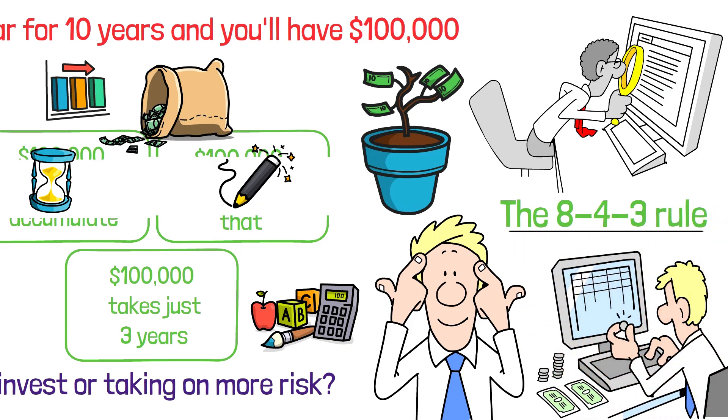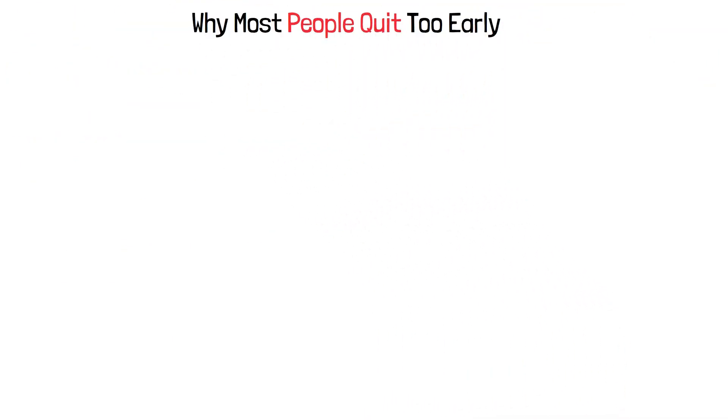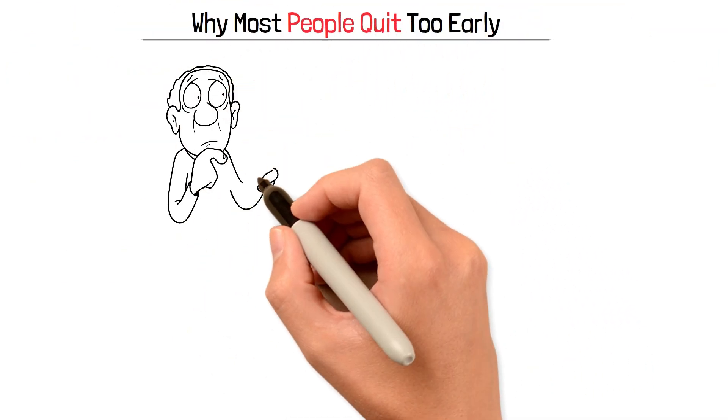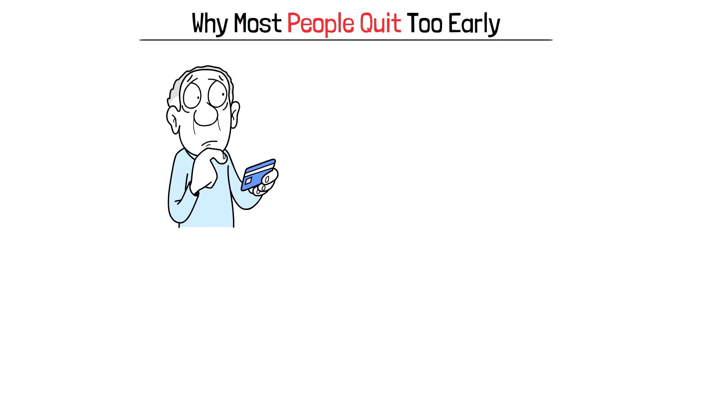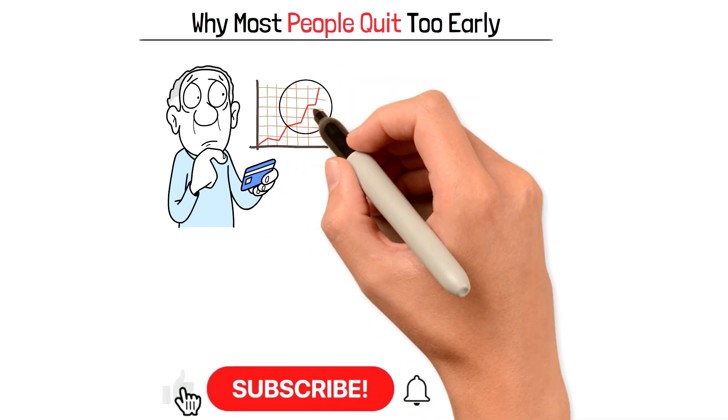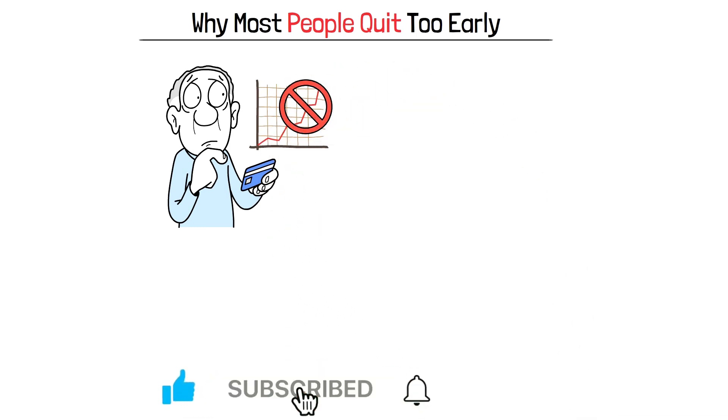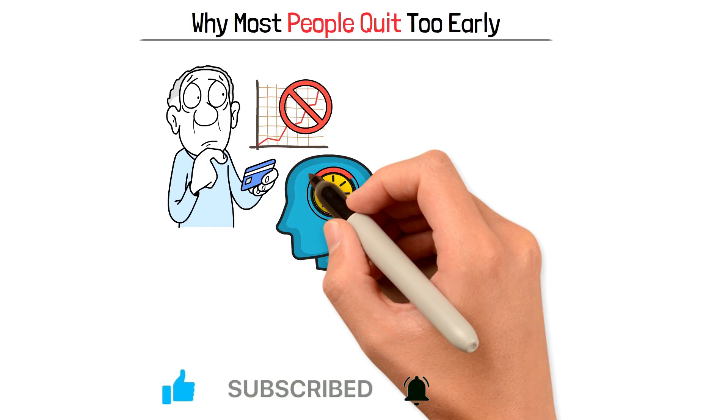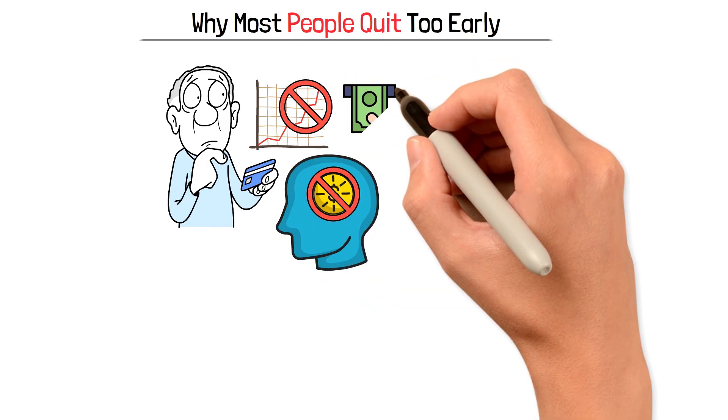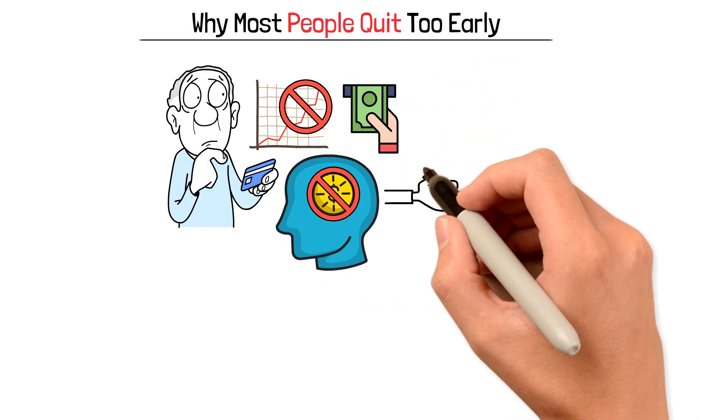Before we dive into the 8-4-3 rule, we need to understand why most people quit right before the magic happens. They look at their account after 3 or 4 years of diligent saving and see modest growth. They feel discouraged because the numbers don't seem impressive. So they stop investing, or worse, they pull their money out to chase something that promises faster returns.